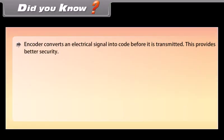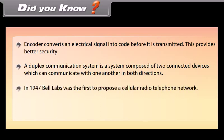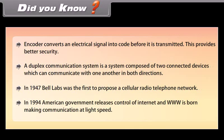An encoder converts an electric signal into code before it is transmitted, providing better security. A duplex communication system is composed of two connected devices that can communicate in both directions. In 1947, Bell Labs was the first to propose a cellular radio telephone network. In 1994, the American government released control of the internet and the World Wide Web was born, making communication at light speed.